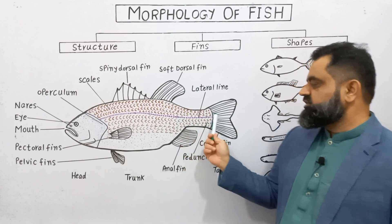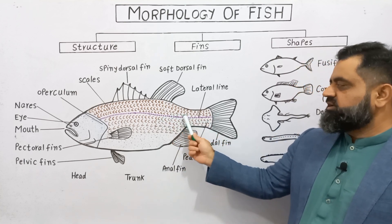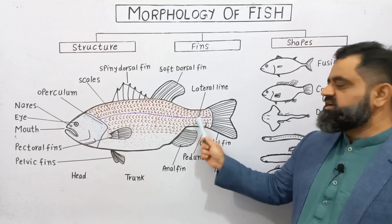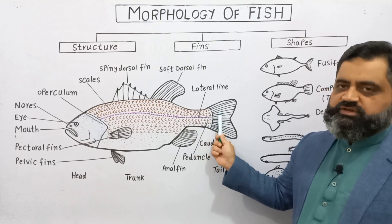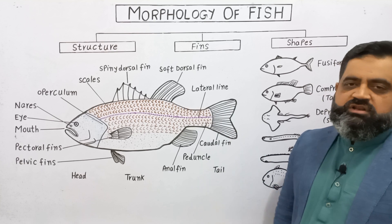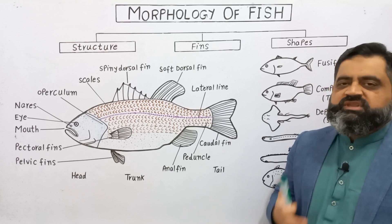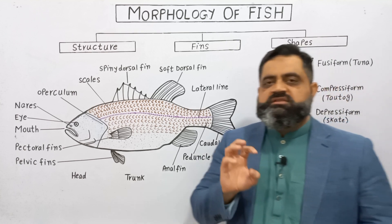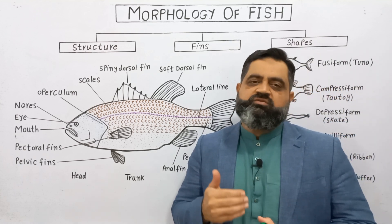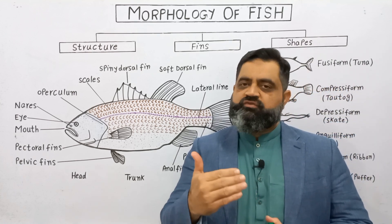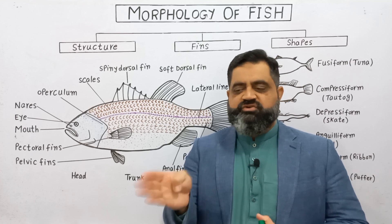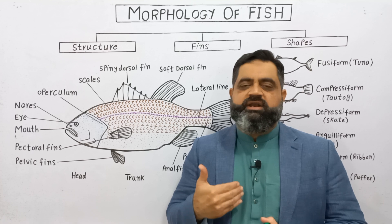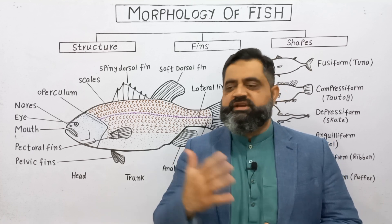On the back of the trunk there is a narrow portion known as the peduncle, which leads into the tail or caudal fin. The caudal fin is also unpaired and it provides thrust to the fish when the fish wants to move forward. It moves very fast just like a fan in the water and propels the fish in the forward direction.